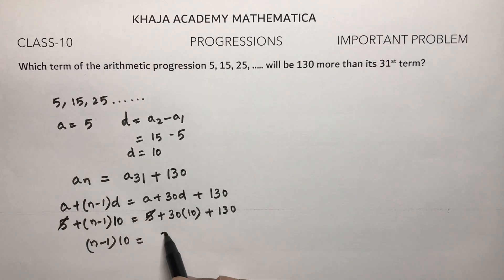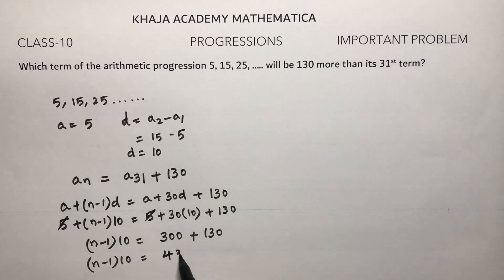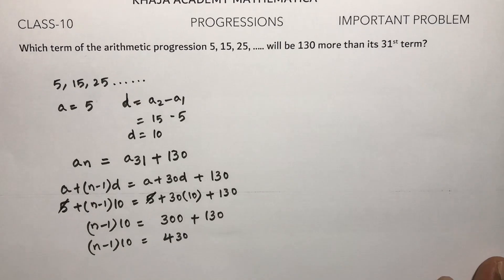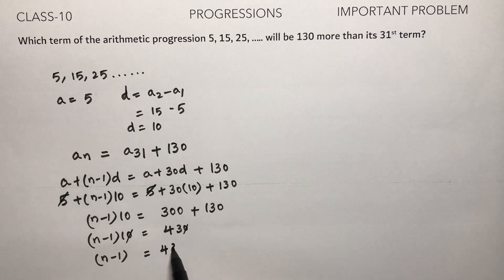You can cancel 10 from both sides, so (n-1) times 10 equals 430. Dividing by 10, n minus 1 equals 43.